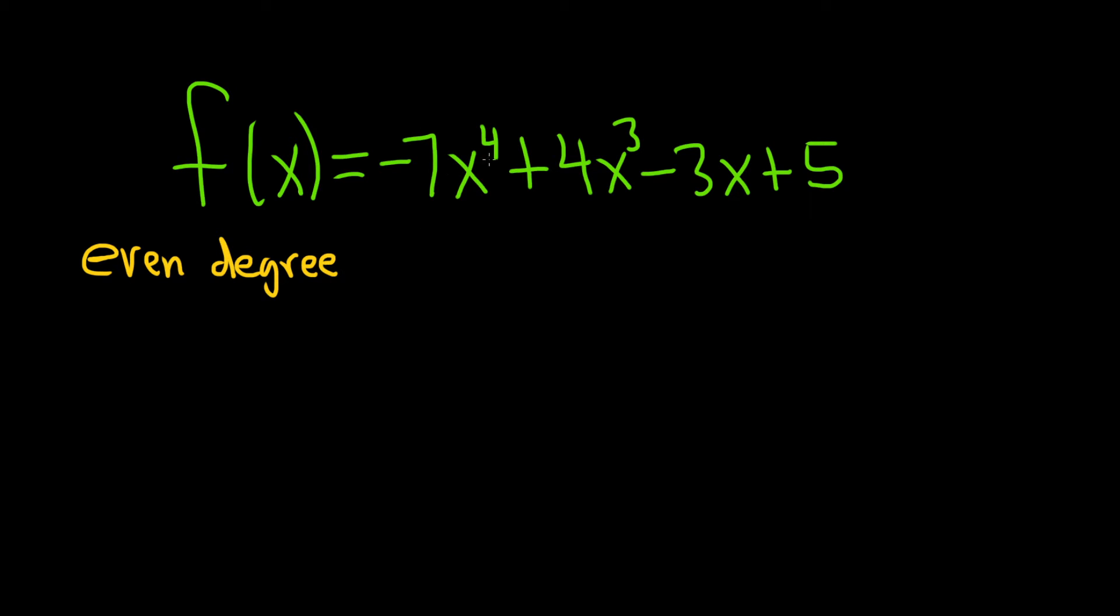And then the number in front of the term with highest degree—so it would be negative 7. That's called the leading coefficient. And in this case, the important thing is that it's negative.